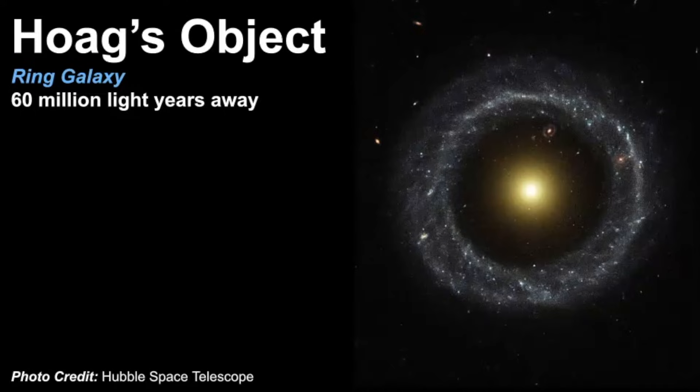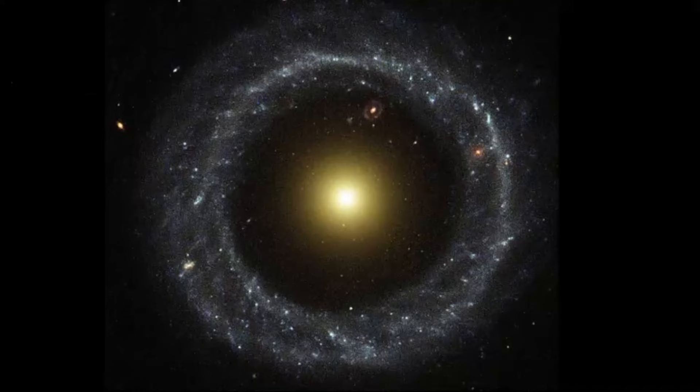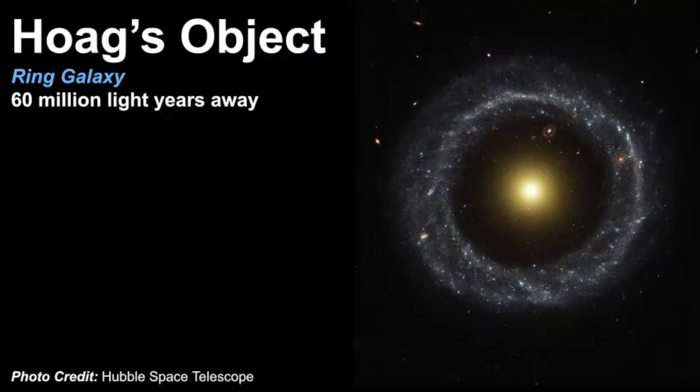This particular object is called Hoag's object due to the person who discovered it in 1950, Arthur Hoag. It was identified, he thought it was a planetary nebula, which it certainly looks like one, but it was then identified as a galaxy. What's really peculiar about this object is if we zoom in, if you look in this space right here, it looks like there's another ring galaxy within there that's perhaps farther away. Hoag's object is estimated to be 60 million light years away.